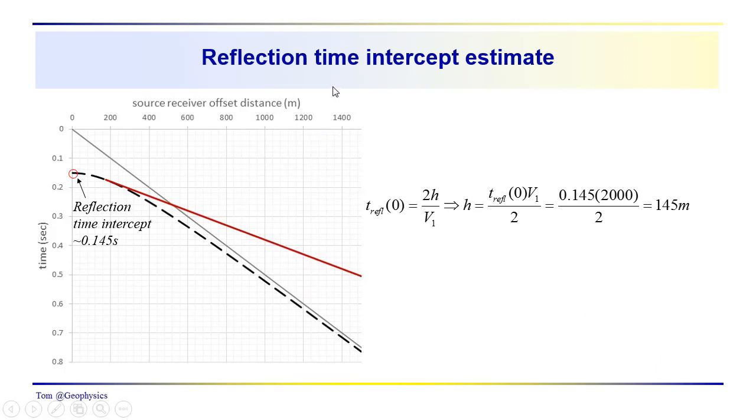Now, we did mention the last time around that we could also use the reflection time intercept. The reflection time intercept here is 0.145 seconds, or that's what I've read it off to be. If you did this, you may have read it off to be, let's say, 0.144 or something like that. So, I'm probably going to get different numbers, but I got a thickness here using the reflection time intercept, or the value of the reflection at x equals 0 times the velocity in the upper layer, which we measured off the slope of the direct arrival, divided by 2, and I get 145 meters.